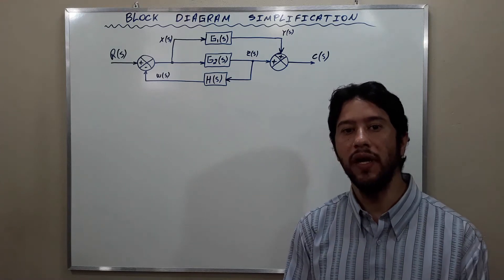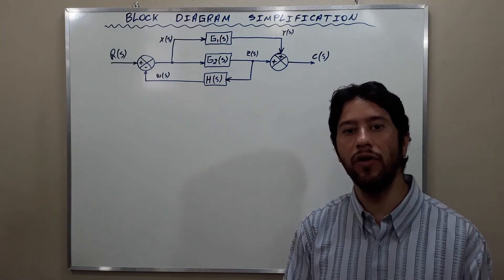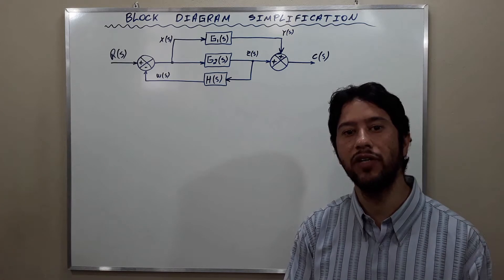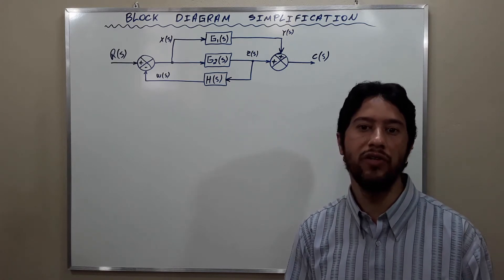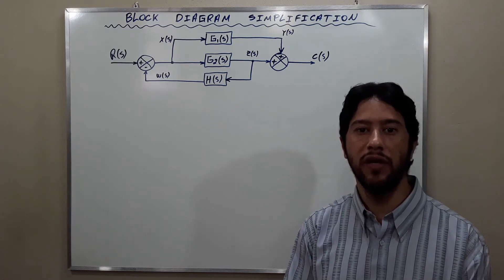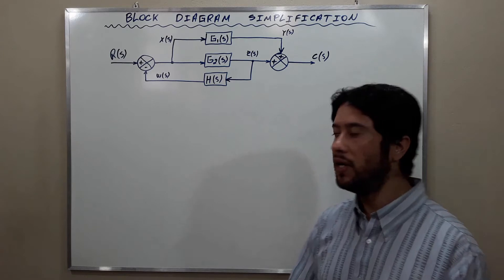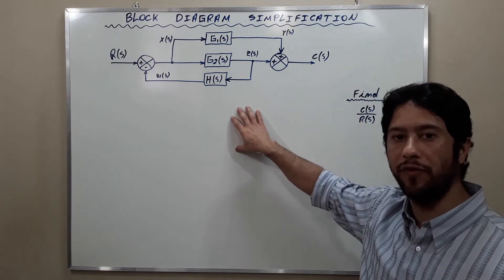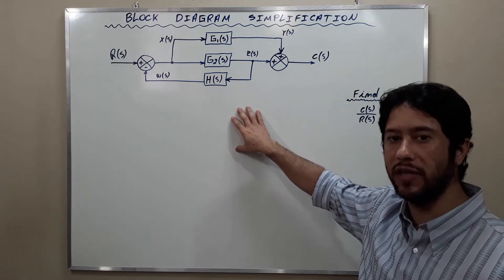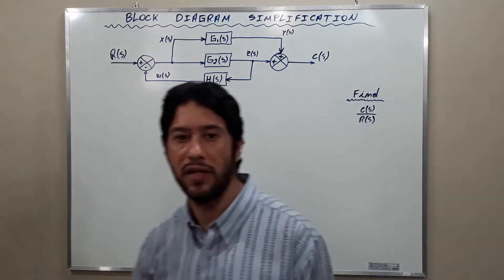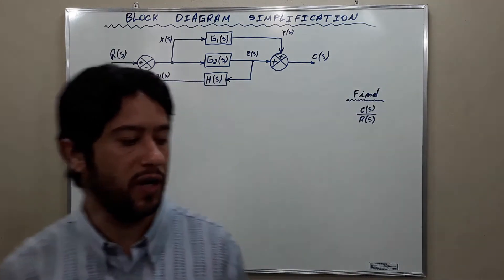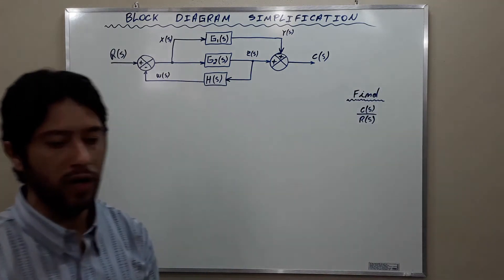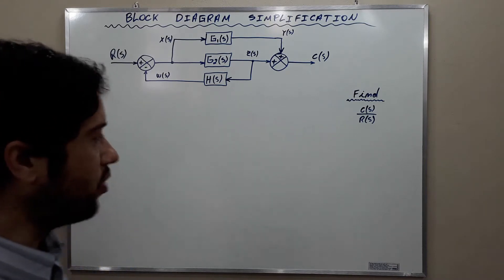Hello everyone! In this video, I'm going to solve two exercises concerning the simplification of two block diagrams to obtain the transfer function. This is the block diagram of the first exercise. Observe that our objective here is to find C of S over R of S. Let's go.